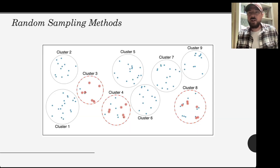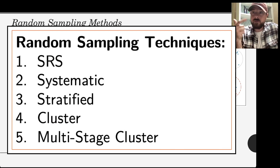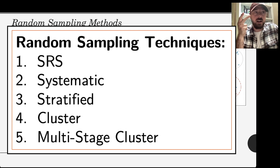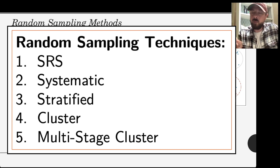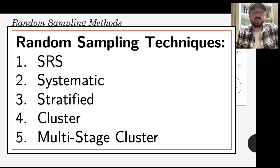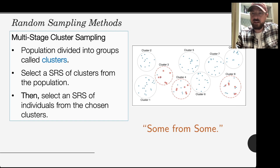So there we go. What did we learn about today? We talked about simple random samples, systematic sampling, cluster sampling, stratified sampling, and multi-stage cluster sampling. Hope this gives you a nice snapshot of what we would have otherwise learned in class today. Good luck working on your assignment and have a beautiful day.